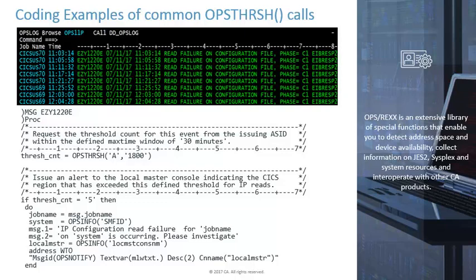Looking at these filtered events from within the OPS log, you'll see that CICS region CICSUS70 has issued five of these events, all within the defined 30 minute window. Thus, after the fifth issuance of this event at 11:21:27, this rule would have generated an alert message indicating that CICS region is having failures. Any subsequent issuances of this event from that CICS region will cause this rule logic to not process until 30 minutes have passed from the first event set at 11:03:14, at which point the counter will be reset.